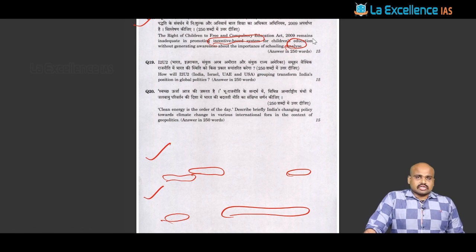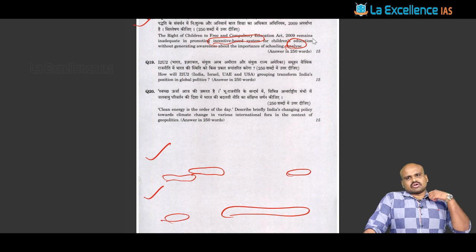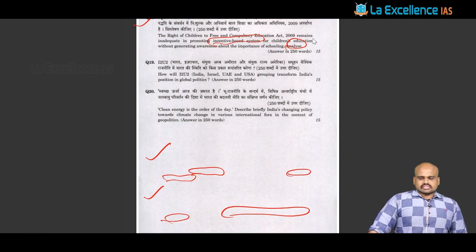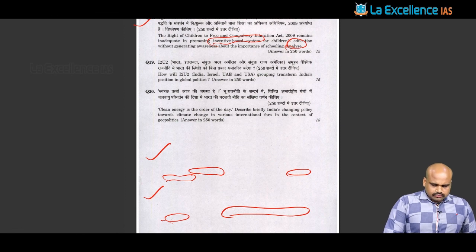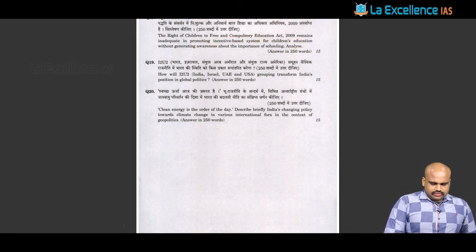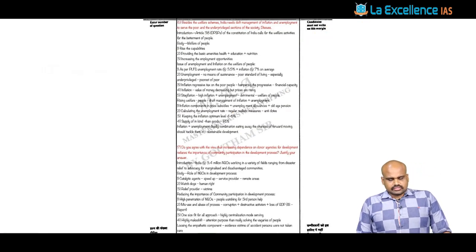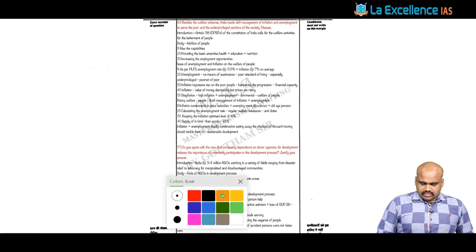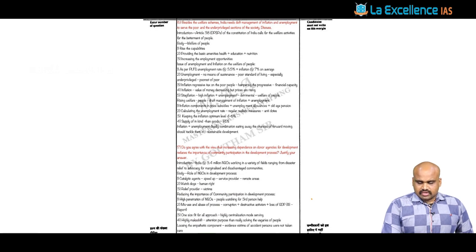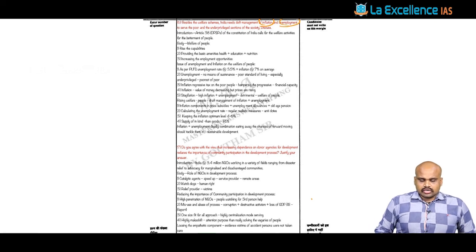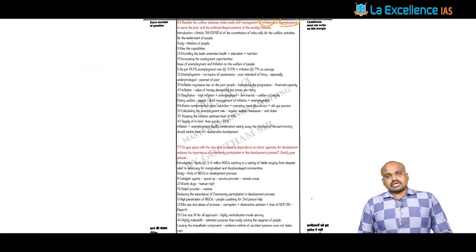There has been a lot of debate regarding the effectiveness of the RTE Act and Article 21A. Now, for the detailed solution to question 16: besides the welfare schemes, India needs deft management of inflation and unemployment to serve the poor and underprivileged sections. We need to categorically talk about the balancing of the welfare state mechanism and welfare state obligations as mentioned in Article 38.